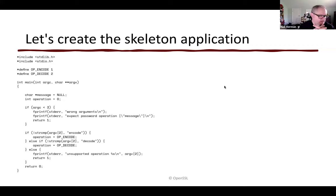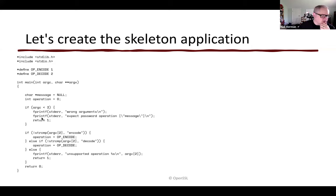Let's create the skeleton of an application. We include our standard libraries for input and output. We define the operations we want to perform: encode or decode the message. The main routine has local variables that codify what our message is and what the operation should be. We do some sanity checking on those, fail the application if requirements aren't met, and do basic processing of parameters — checking the second argument to set our operation value for control flow. Pretty straightforward, but it does absolutely nothing useful yet.